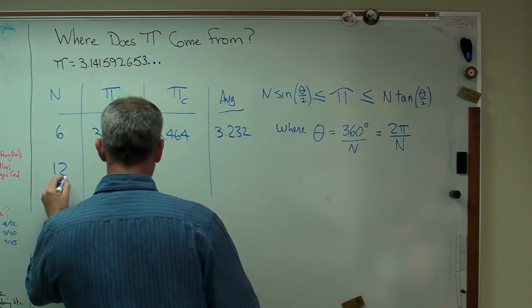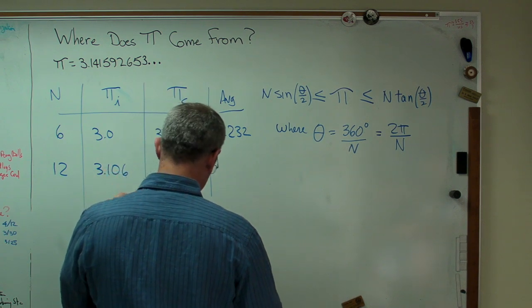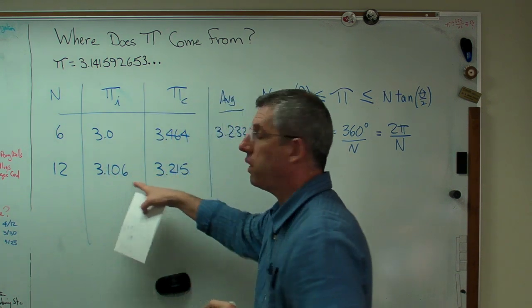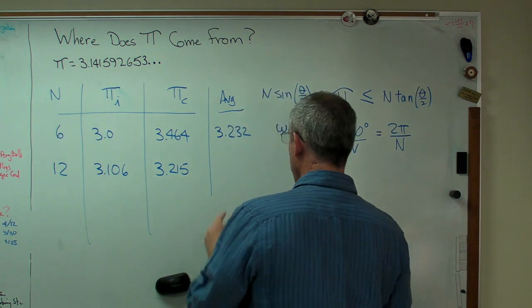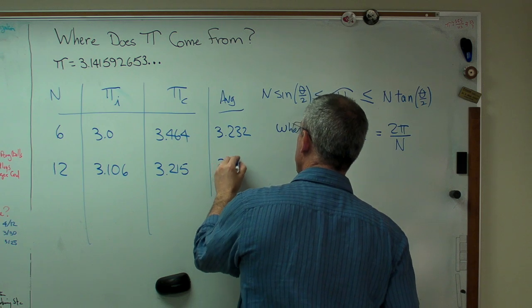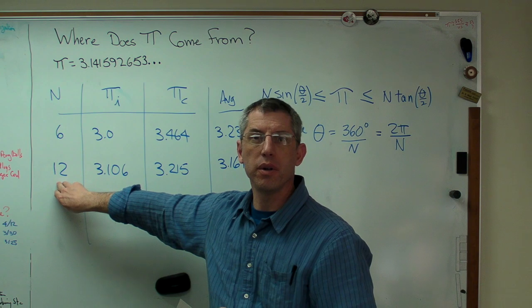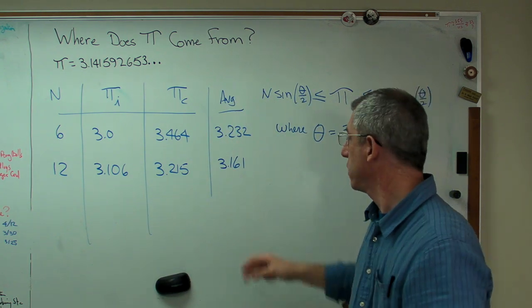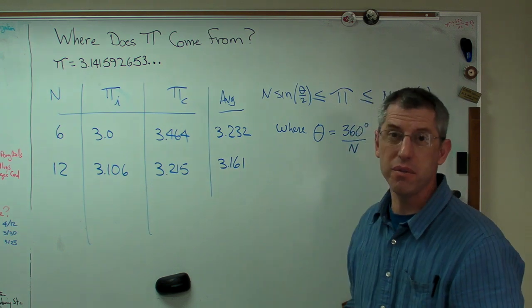If you double the number of sides, you get 3.106 there and 3.215 there. It's pretty clear those are on opposite sides of pi. Pi lies in between those. And so if you average them, you get 3.161. Well, this is still a manageable number of sides, and that's really not too bad. Now, it's not accurate enough for modern purposes, but for ancient Greece, that wasn't bad.